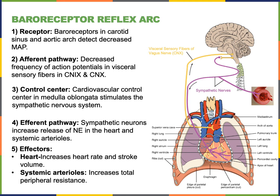The heart will increase heart rate and stroke volume, leading to increased cardiac output. At the same time, the systemic arterioles can have vasoconstriction in order to stimulate an increased total peripheral resistance.